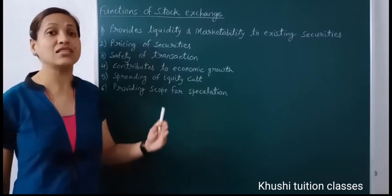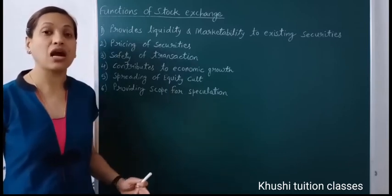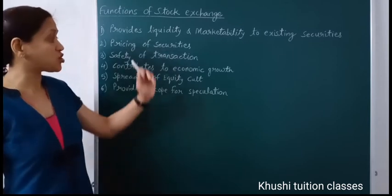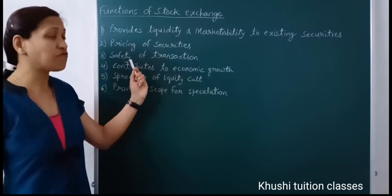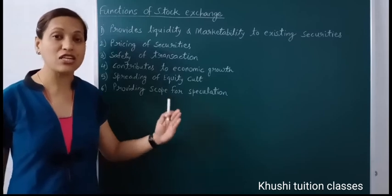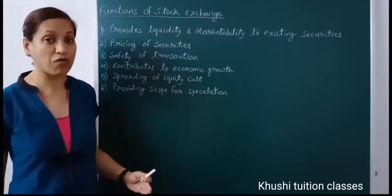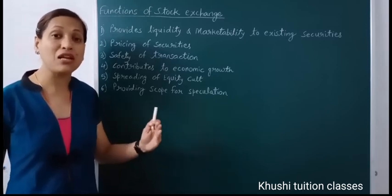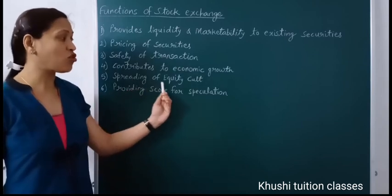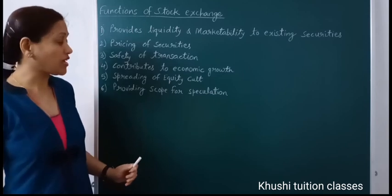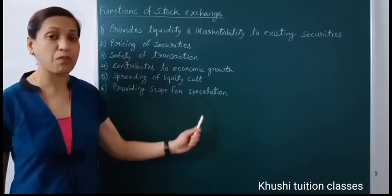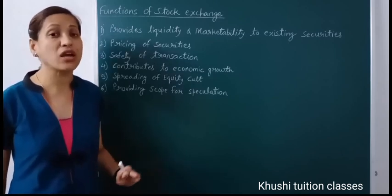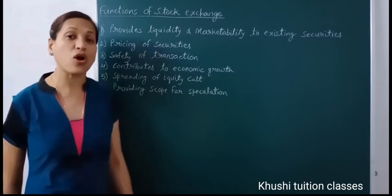The fifth function is spreading of equity cult. Earlier, the public used to invest savings in saving accounts, recurring deposit accounts, and fixed deposit accounts. But now the interest rate on deposits has become very low, whereas stock exchange provides liquidity on securities and safe transactions are possible, so the public is being diverted towards the stock exchange to get more returns. Stock exchange also provides timely information about price fluctuations in the stock market. So the spread of equity culture is possible because of stock exchange. The sixth function is providing scope for speculation. Stock exchange allows speculation to some extent so that liquidity and continuity in the stock market is maintained.